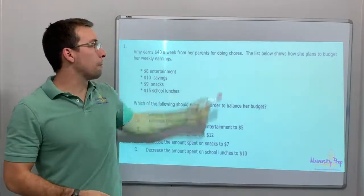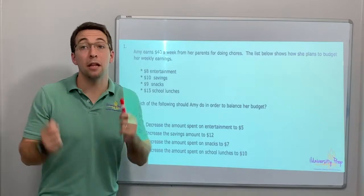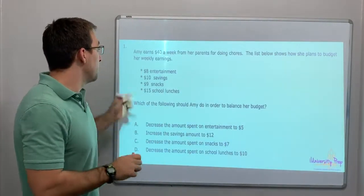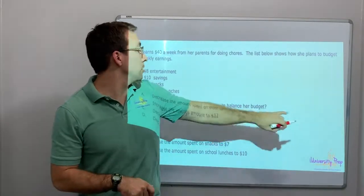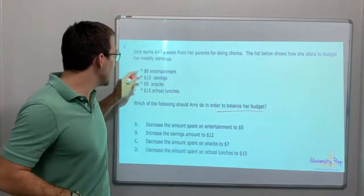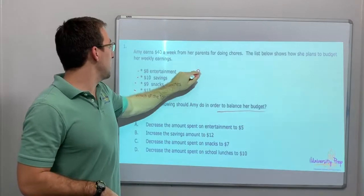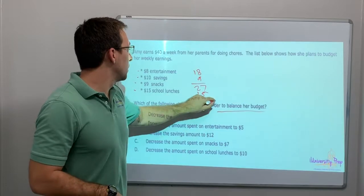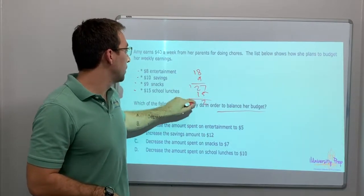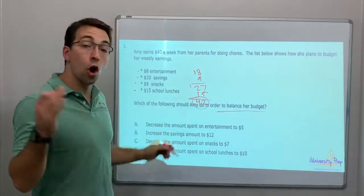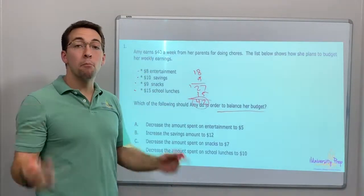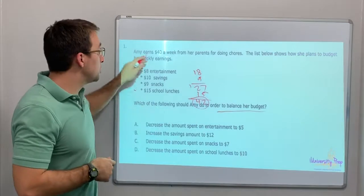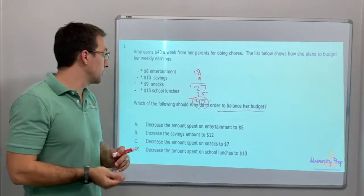Amy earns $40 a week from her parents doing chores. The list below shows how she plans to budget her weekly earnings: $8, $10, $9, $15. Which should Amy do in order to balance her budget? What does this add up to? 18 plus 9 is 27, plus 15... $42. She's over budget – she's going to spend more than she makes. She makes $40, she spends $42. That's bad news.